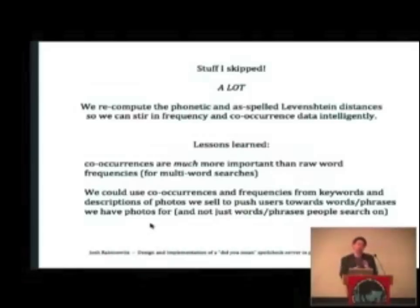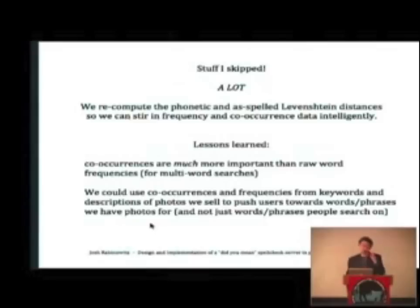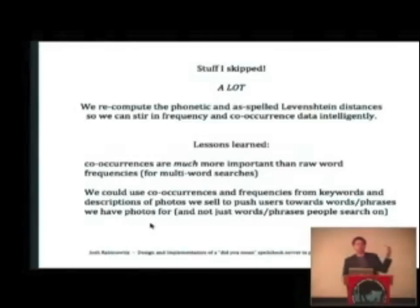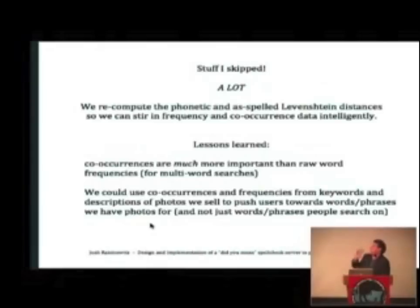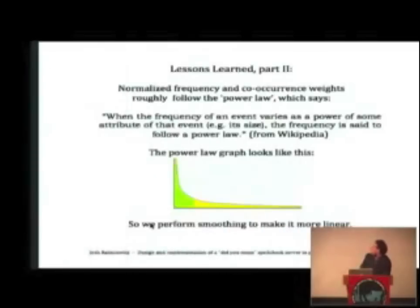When I spent time on this, I discovered that for multi-word searches, co-occurrence data is much more valuable than raw frequency data, because just because a word is common doesn't mean it appears next to another particular word. We could also use co-occurrences of keywords and photo descriptions to steer people towards what we have pictures of, but I chose not to do this — I figured it was more accurate to try and figure out what they were trying to type rather than steer them towards what we happen to have pictures of.